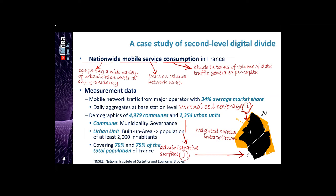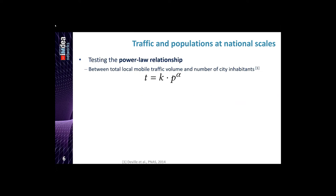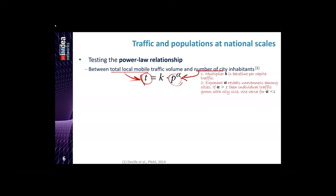With data ready, we started model analysis. From past literature we knew there is a power law relationship between traffic and population, although at different spatial granularities. We tested the power law equation: T represents total traffic for administrative unit i, and P represents population for that unit. The objective is to find values k and alpha, where k represents baseline per capita traffic and alpha reveals unevenness among cities. If alpha is greater than one, inhabitants of big cities consume more traffic than those in small cities, and vice versa if alpha is less than one.